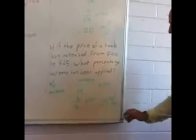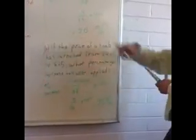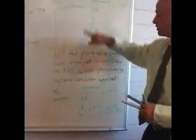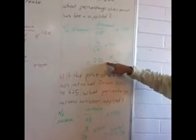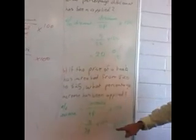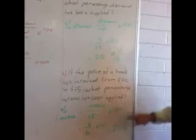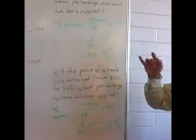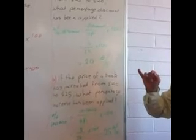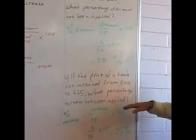25% so the increase was 25%. It's still $5 this one was a change of $5 this one is a change of $5 but this discount was 20% this increase was 25% so please don't assume that they're the same just because the change is the same amount. Is that clear? Any questions there?